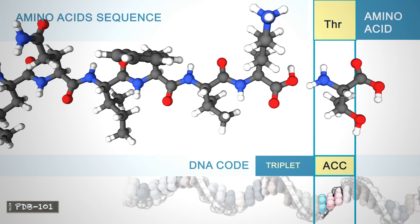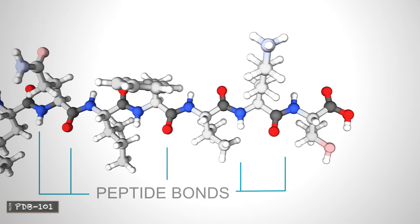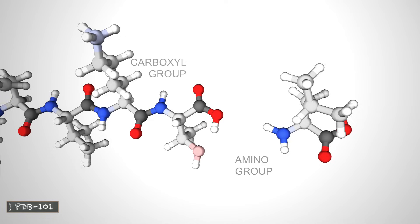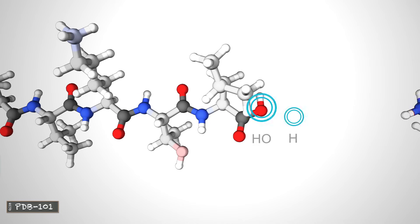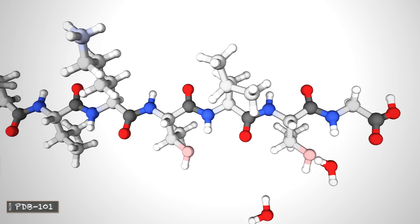The amino acids in a protein are joined by peptide bonds, which link the amino group of one amino acid to the carboxyl group of another. A water molecule is released each time a peptide bond is formed.